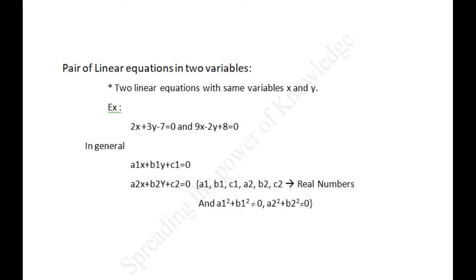Pair of linear equations in two variables: two linear equations in the same variables x and y are called a pair of linear equations in two variables. For example: 2x plus 3y minus 7 equal to 0 and 9x minus 2y plus 8 equal to 0. In general form, a pair of linear equations in two variables x and y is: a1x plus b1y plus c1 equal to 0 and a2x plus b2y plus c2 equal to 0, where a1, b1, c1, a2, b2, c2 are real numbers, and a1² plus b1² not equal to 0 and a2² plus b2² not equal to 0.